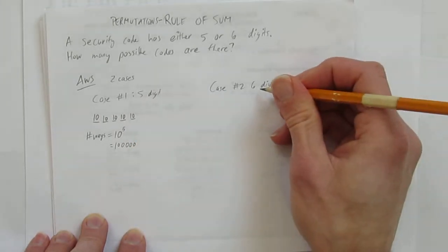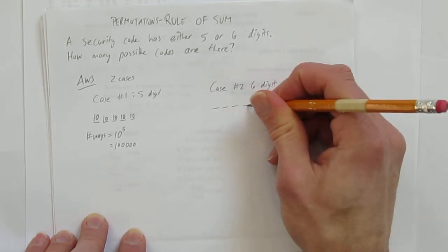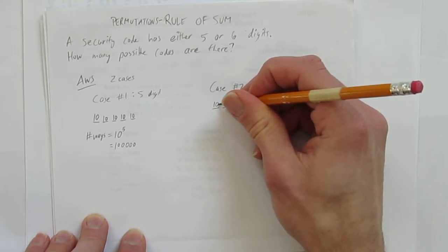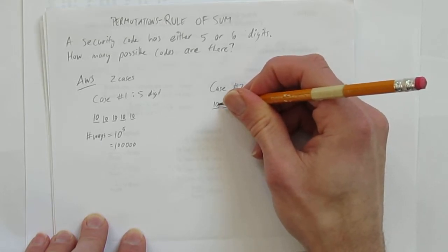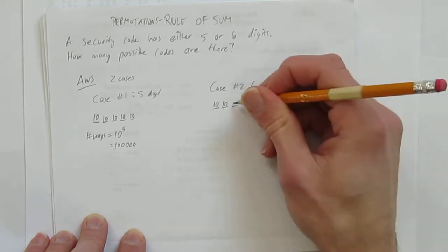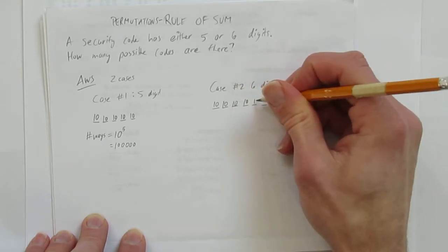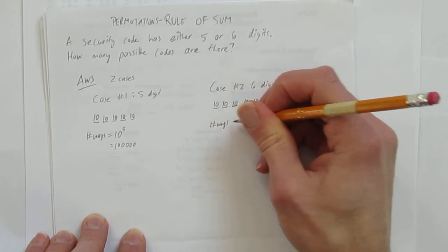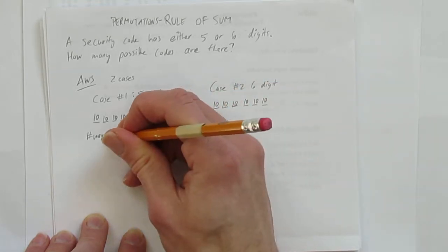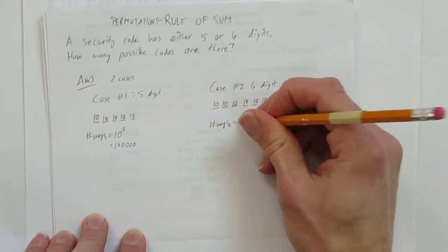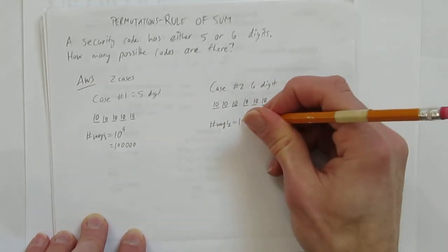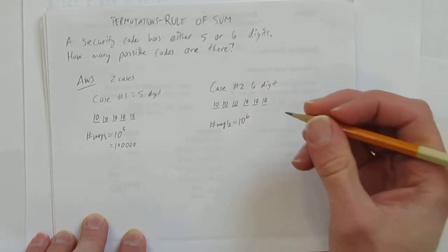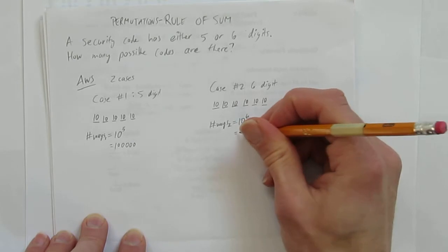Case number two is a six-digit code. Same sort of strategy with blanks or boxes — you don't have to use it, but it helps visualize: ten choices for each of the six digits. I'll separate these with a subscript — this was the ways for case one, here's the ways for case two. There are ten to the power of six ways to choose a six-digit code, which of course is a million.